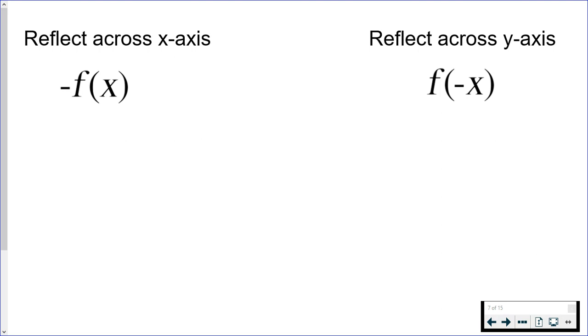With the reflection across the x-axis, I just said y is changing. f(x) is the same thing as y. So in this case, I'm changing the sign of y - changing it to -f(x).